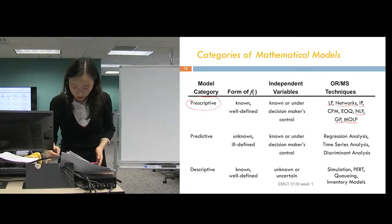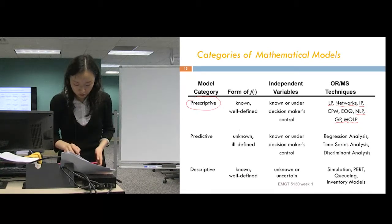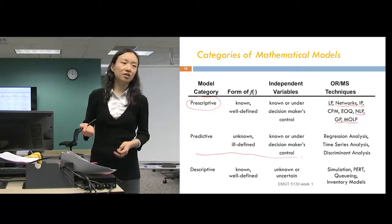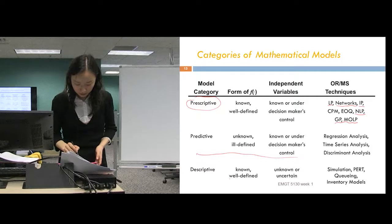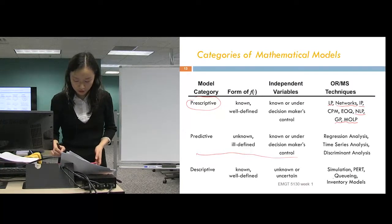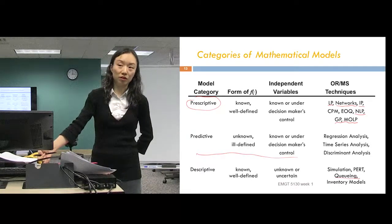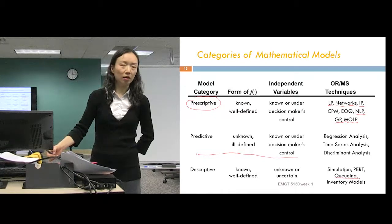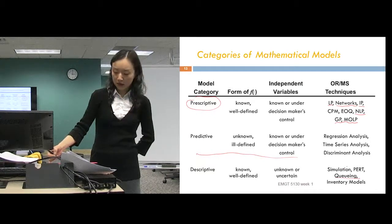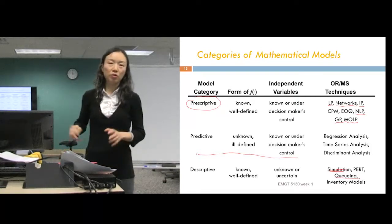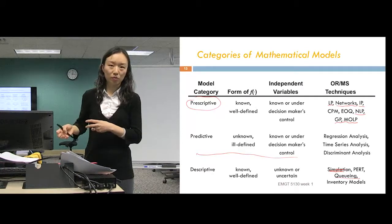And there are some other kind of techniques which all belong to OR and MS that are not covered in this class. And you can see that the form of the function may be unknown or ill-defined. Like this type of model, usually you use statistics analysis. And if the form is well-known, but the independent variable is unknown, uncertain, then simulation will be that. The queueing theory is one major part of operations research. We don't have time to cover it in this class. And in my personal view, those queueing theory problems are easier to be analyzed using simulations. So, we're just covering those prescriptive models, which means you're always able to write a closed-form function for your decision variables and your objective.